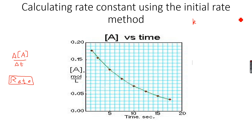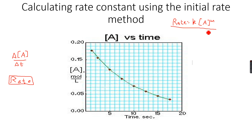We know that rate is equal to K times the concentration of A to the power of M. We ignore B for now because B is kept constant, and we measure the concentration of A with time. So K is equal to rate over the concentration of A to the power of M. When we calculate rate at a particular point — delta A over delta T — we can divide that by the concentration at that point.